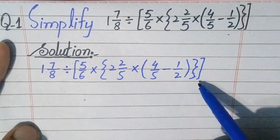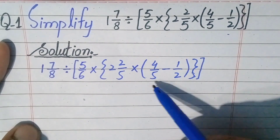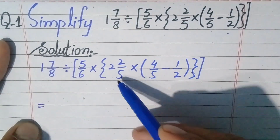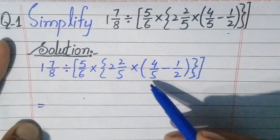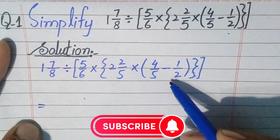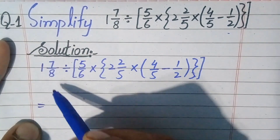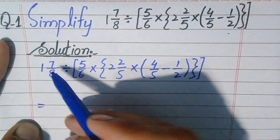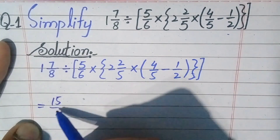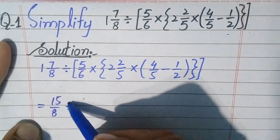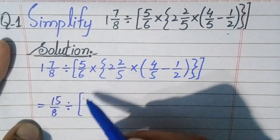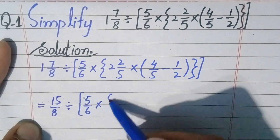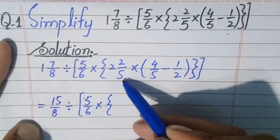So how can we solve the parentheses? First write down equality, and we will change the mixed fractions inside the question to improper fractions, and also do the subtraction of the two numbers inside the parentheses. To change the mixed fraction: 8 times 1 is 8, 8 plus 7 is 15, giving us 15/8. Then divide, square bracket open, 5/6 multiply, brace open — we will also change this mixed fraction to improper fraction: 5 times 2 is 10, 10 plus 2 is 12, divided by 5.